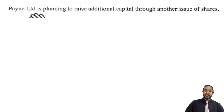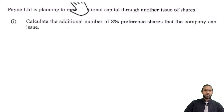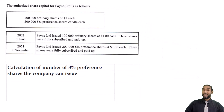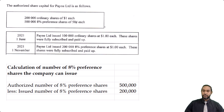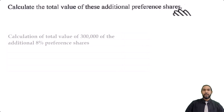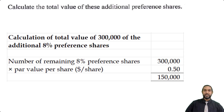Part E says Payne Limited is planning to raise additional capital through another issue of shares — calculate the additional number of 8% preference shares the company can issue. We authorized 500,000 preference shares and have issued 200,000, so 500,000 minus 200,000 = 300,000 preference shares remaining. The last part asks for the total value of these additional preference shares: the par value is $0.50, so we multiply 300,000 by $0.50 to get the total value.